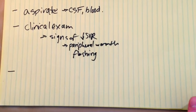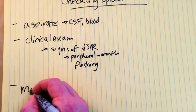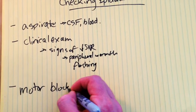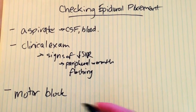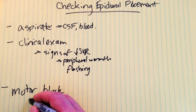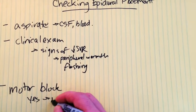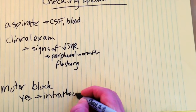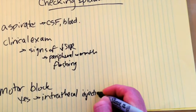The one thing that I didn't actually think of, and I had to be prompted for this, is you can check for motor block. This will kind of form the crux of this video — but if the patient has a significant motor block, then it's more likely that they had an intrathecal injection of local anesthetic.